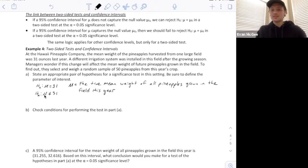So the alternative is, is it different this year after they've implemented this new irrigation system? So μ is the true mean weight of all the pineapples grown in the field this year with the new irrigation system.